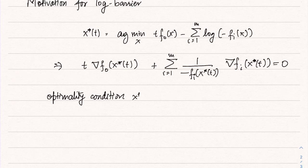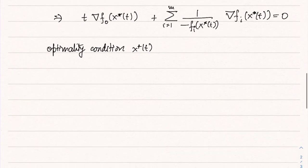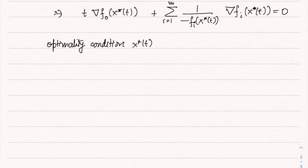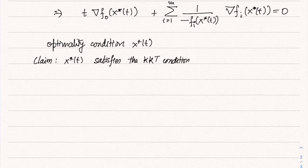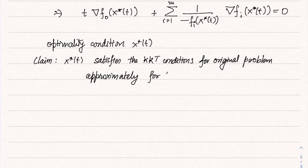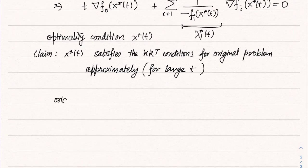Keeping the optimality condition aside, let us write down the KKT conditions for the original problem and for x*(t). Our claim is that x*(t) satisfies the KKT conditions for the original problem — approximately — and that approximation error will be small when t is large. To see that, let us denote the quantity 1/(−t·fᵢ(x*(t))) by λᵢ*(t).